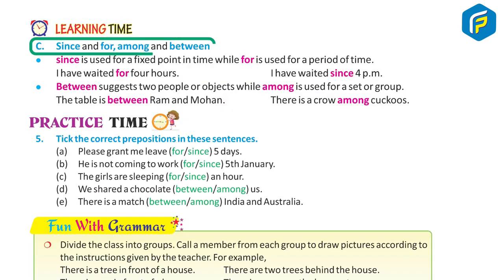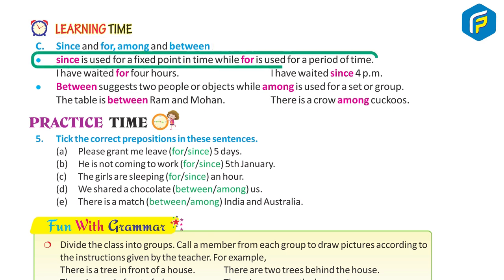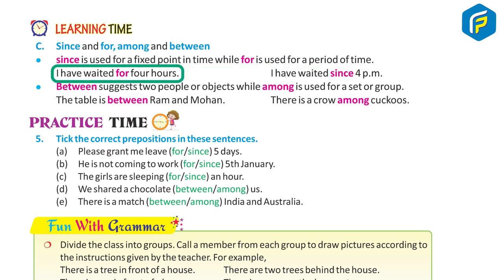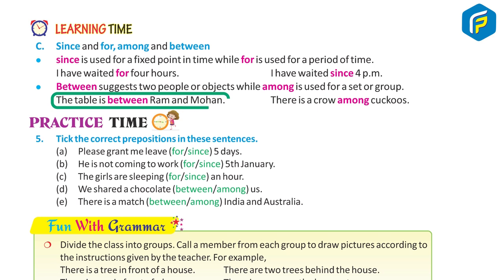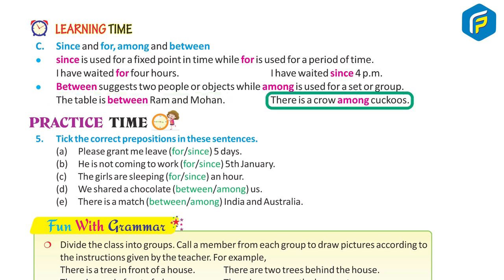Learning Time C: 'Since' and 'for'; 'Among' and 'Between'. 'Since' is used for a fixed point in time, while 'for' is used for a period of time. Examples: I have waited for 4 hours. I have waited since 4 pm. 'Between' suggests two people or objects, while 'among' is used for a set or group. Example: The table is between Ram and Mohan. There is a crow among cuckoos.